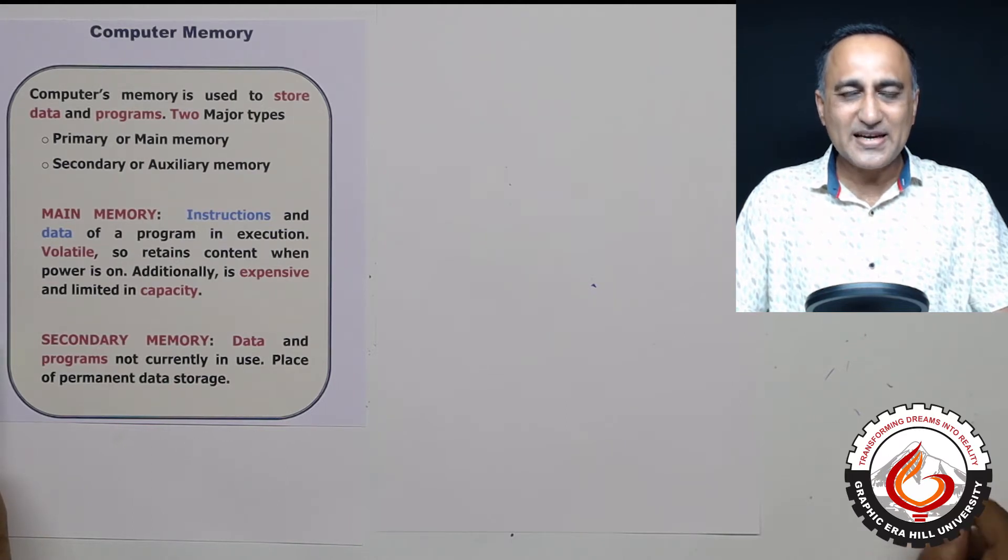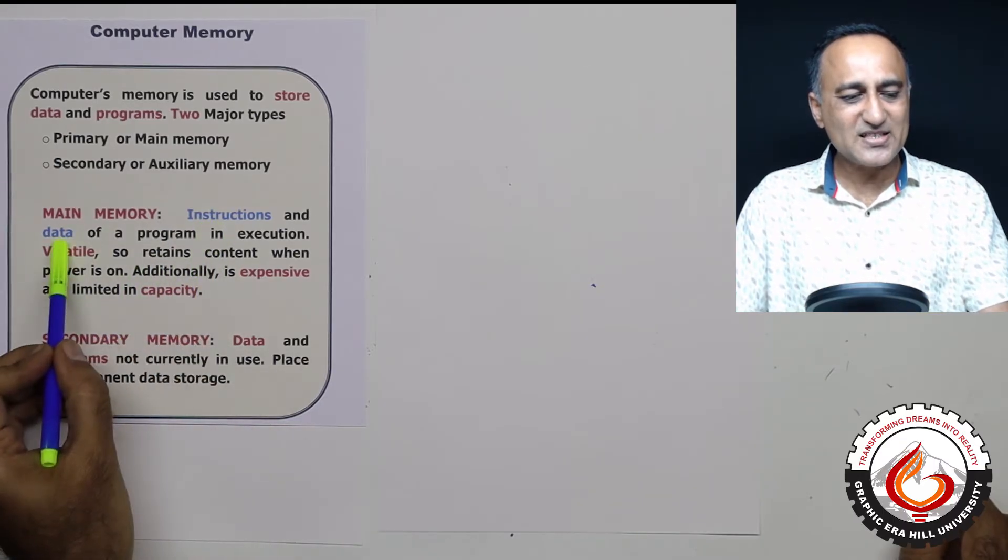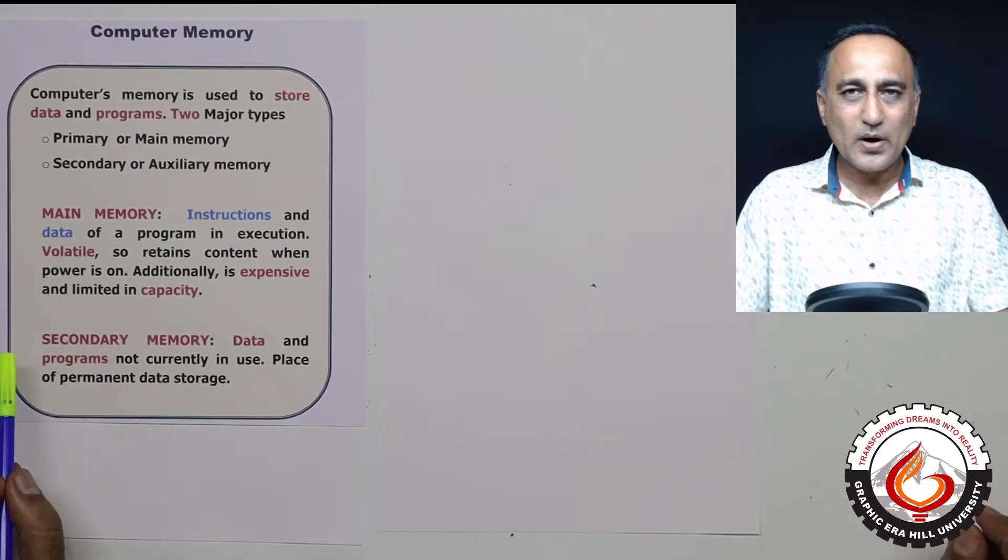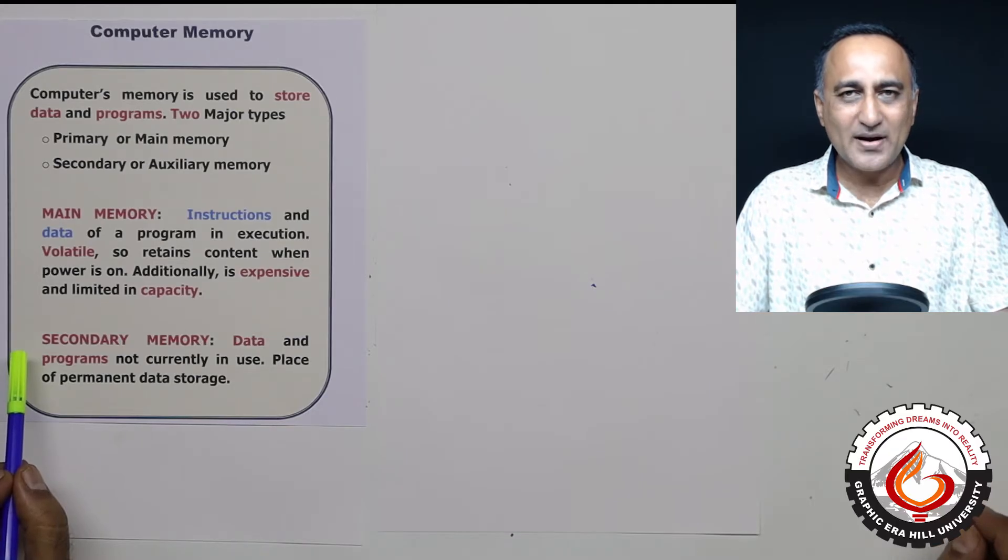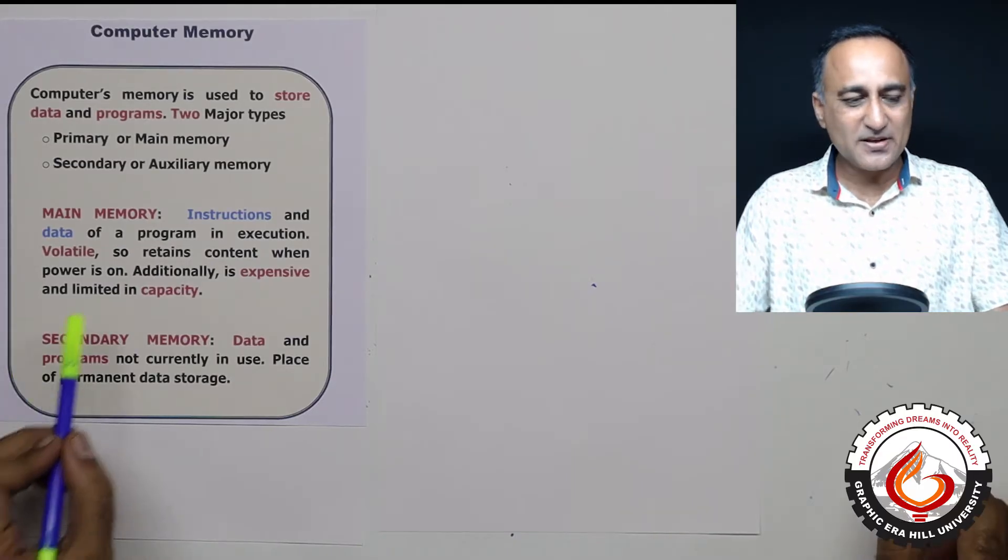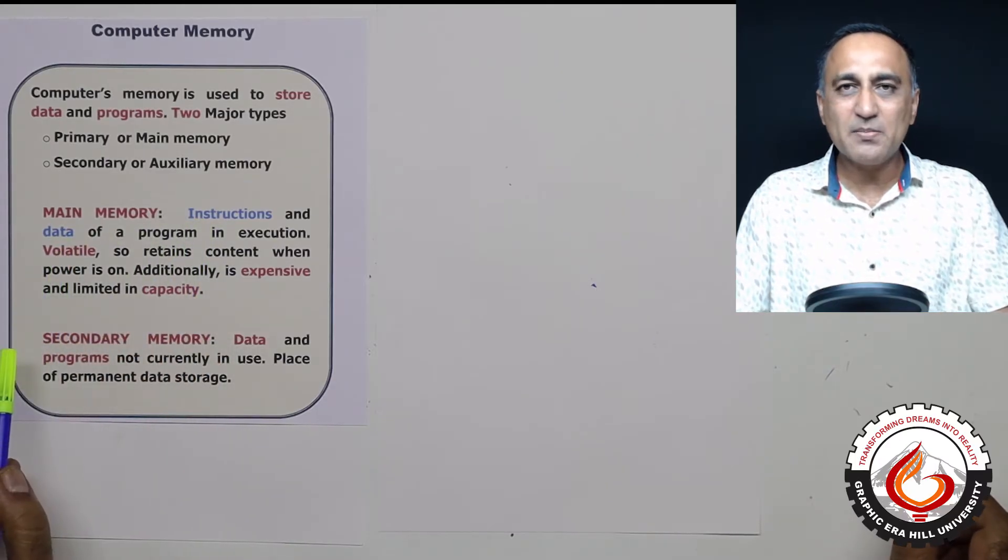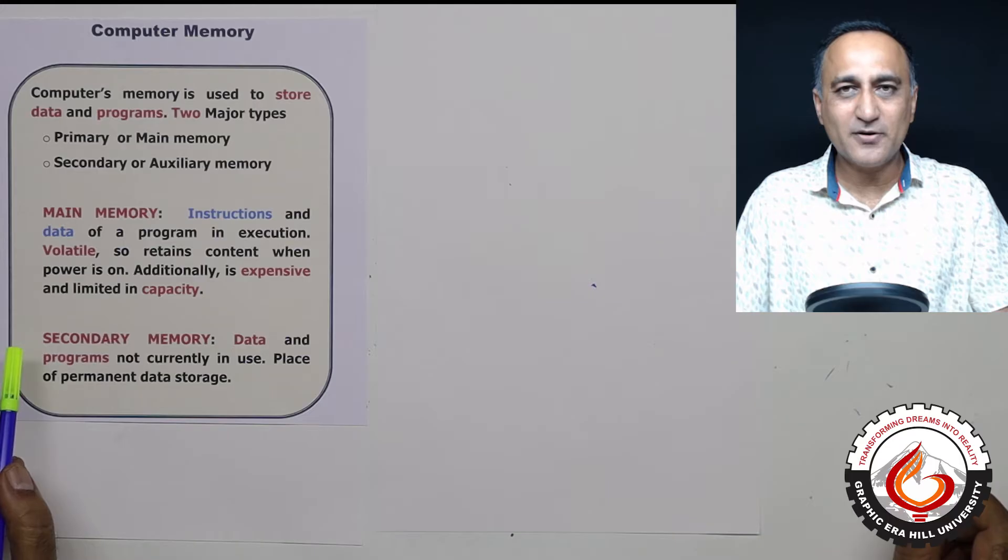Let's first try to understand what is the main memory. Main memory is that memory of the computer which holds the instructions and data required by the CPU for executing a program. That means if it is currently running some program, it is 100% required that the current instructions and data should be in the main memory or the random access memory of a computer.